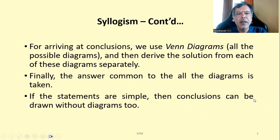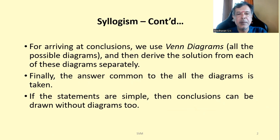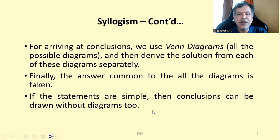For arriving at conclusions, generally we use Venn diagrams — all the possible diagrams — and then derive the solution from each of these diagrams separately. Finally, the answer common to all the diagrams is taken. If the statements are simple, then conclusions can be drawn without diagrams too.